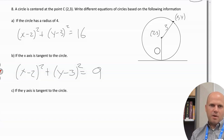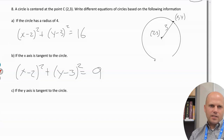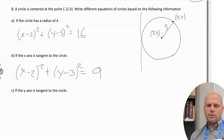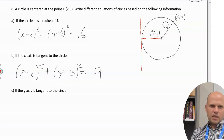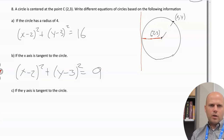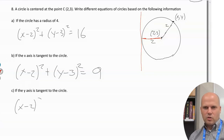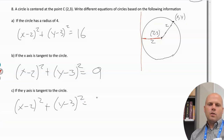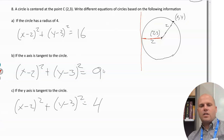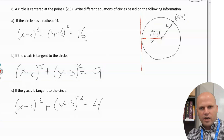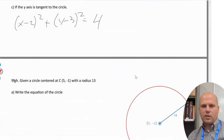What if the y-axis is tangent to the circle instead? Then the tangent line is vertical. The distance from center (2,3) to the y-axis is 2 — that becomes the radius. So the equation is (x-2)² + (y-3)² = 4. Notice only the radius changes across these scenarios. We want all (x,y) points where the radius is 4, or 3, or 2 depending on which tangent condition is given.